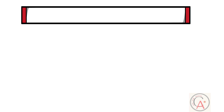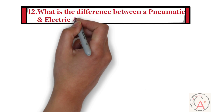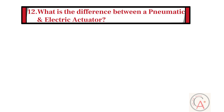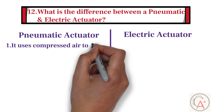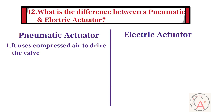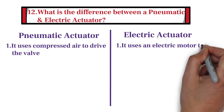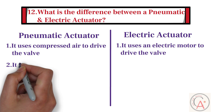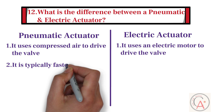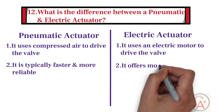Twelfth question: what is the difference between a pneumatic and electric actuator? A pneumatic actuator uses compressed air to drive the valve, while an electric actuator uses an electric motor to drive the valve. Pneumatic actuators are typically faster and more reliable, while electric actuators offer more precise control.